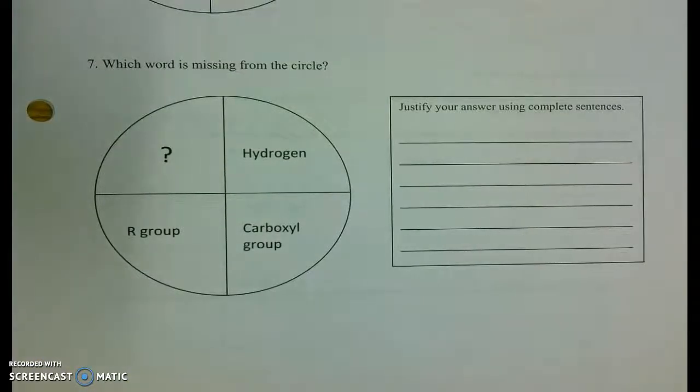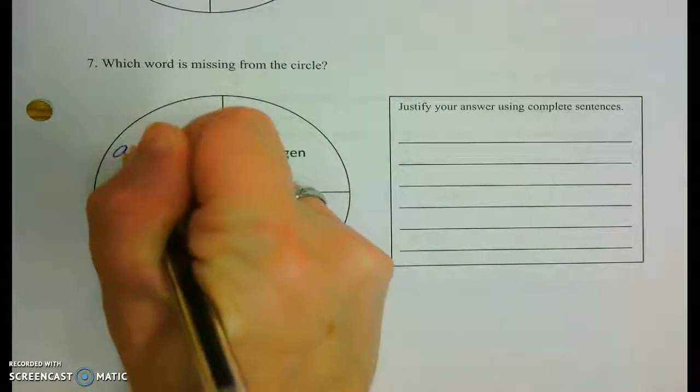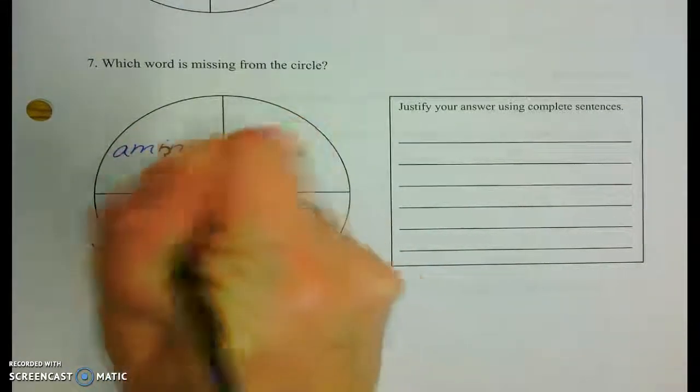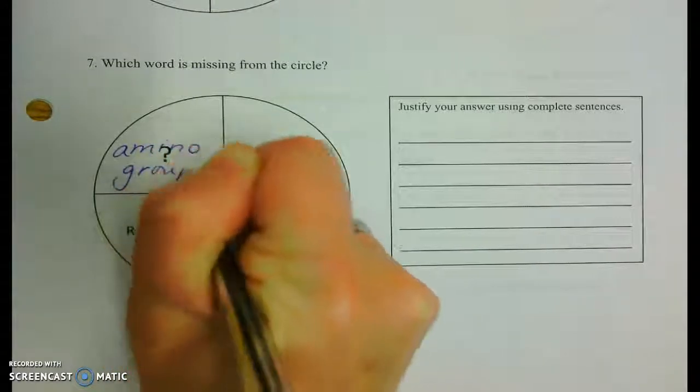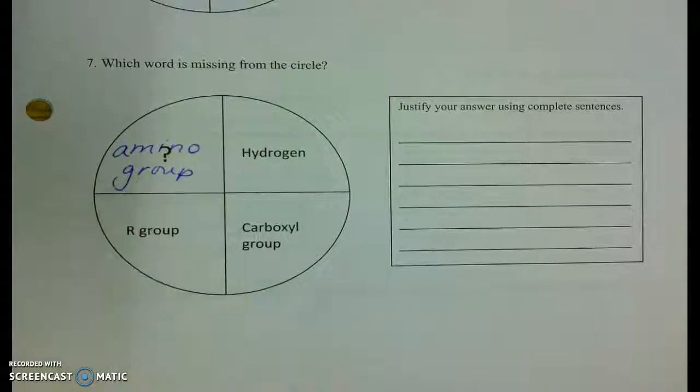This feels like more protein talk. Who is missing from the circle? These are all descriptions of groups that hang off that alpha or that central carbon. There is an R group, a carboxyl, a hydrogen hanging off. So, our best choice here is going to be the amino group. After all, that's what it takes to be. An amino acid is to have an amino group and a carboxylic acid.